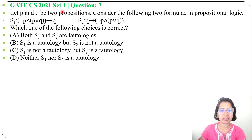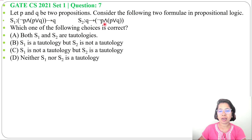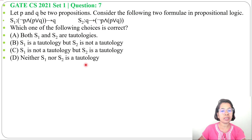Let's solve one previous question of mathematical logic. This question was asked in GATE CS 2021 Set 1, Question 7. Let P and Q be two propositions. Consider the following two formulae in propositional logic. S1 is: negation of P, and P or Q, whole implies Q. S2 is: Q implies negation P, and P or Q. Which of the following choices is correct? Four options are given about tautology.